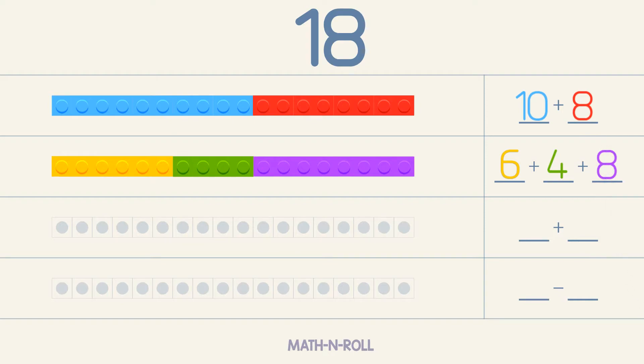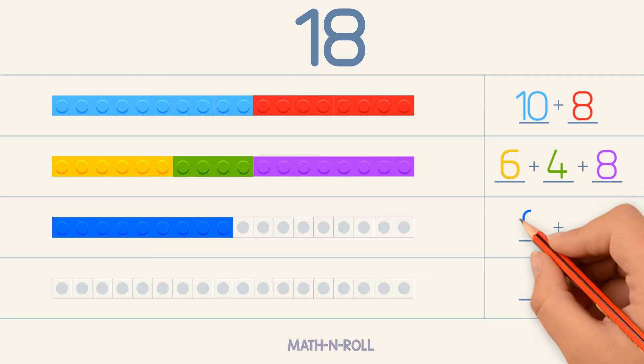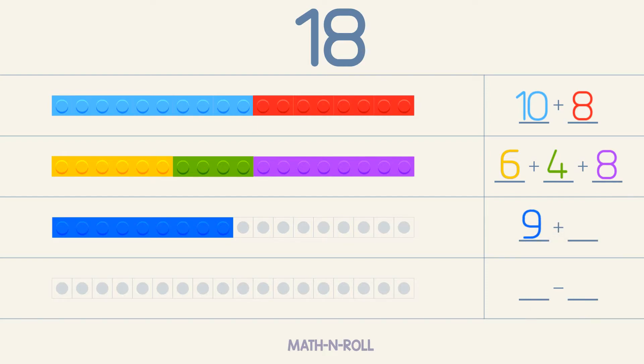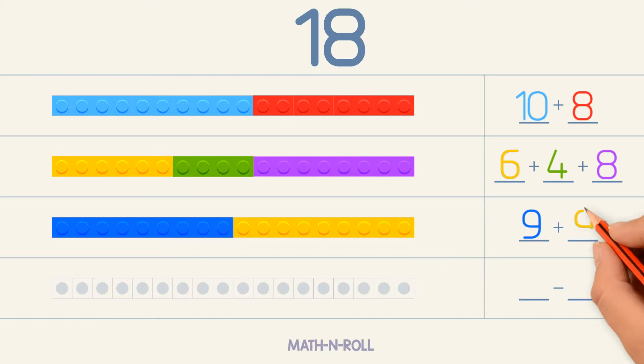Let's make 18 by adding 2 numbers. For the first number, we can pick 9. To make 18, we need 9 more pieces. So 9 plus 9 equals 18.